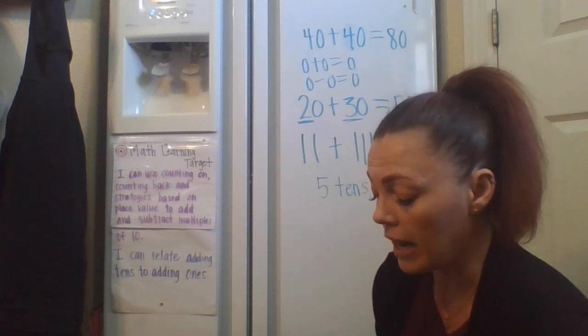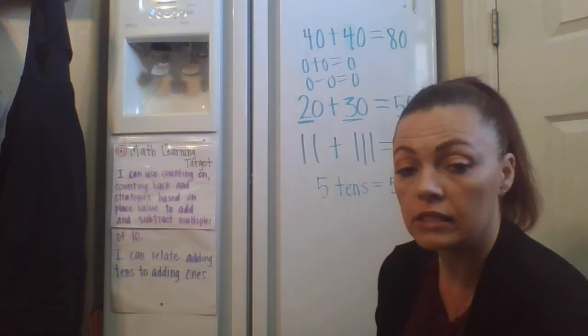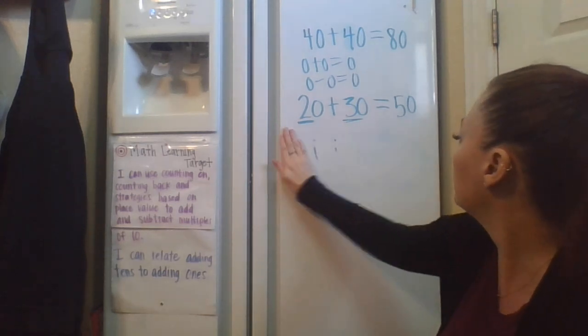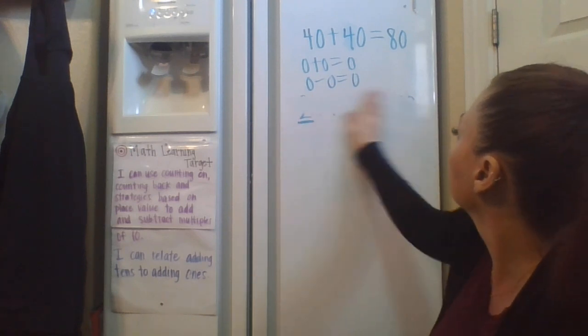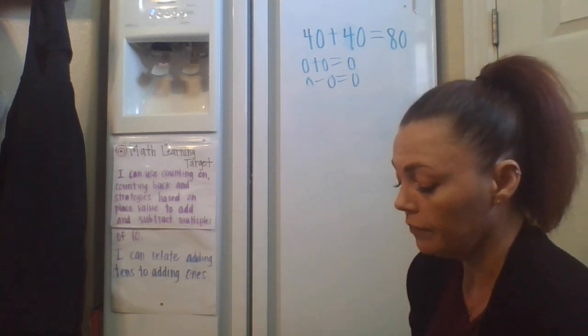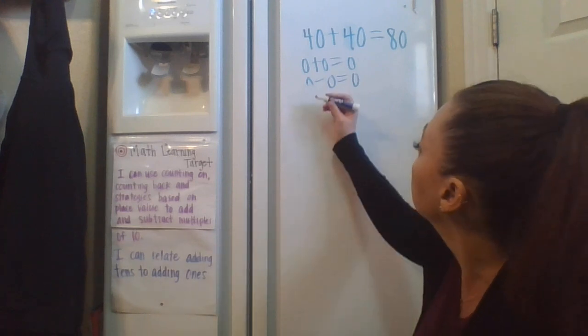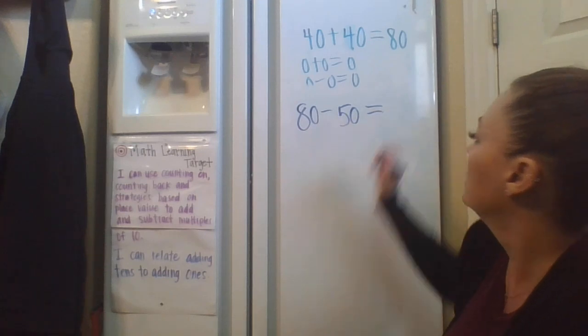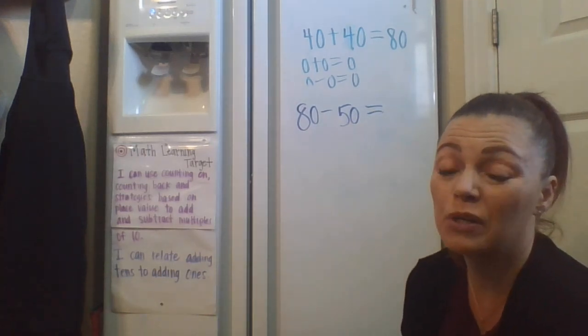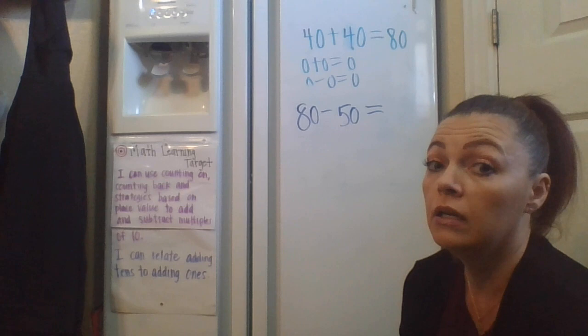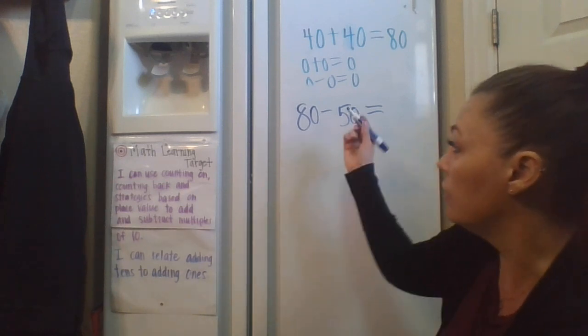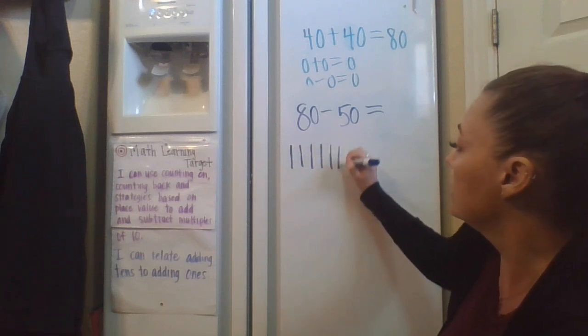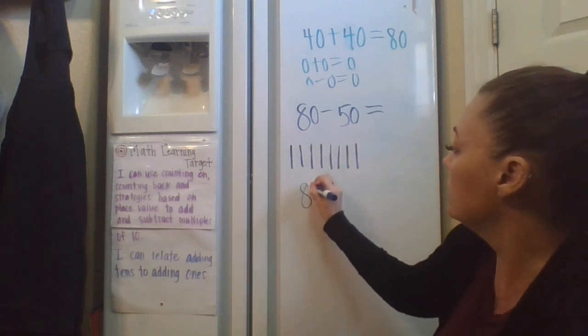You're also going to be subtracting. This is an adding and a subtracting chapter. So let me make some room. Okay, so if I have this problem, 80 minus 50. Oh no, those are big numbers. 80 minus 50, that's pretty big, right? You can do two things. Again, you can look at your tens and ones. 1, 2, 3, 4, 5, 6, 7, 8. This is 8 tens.